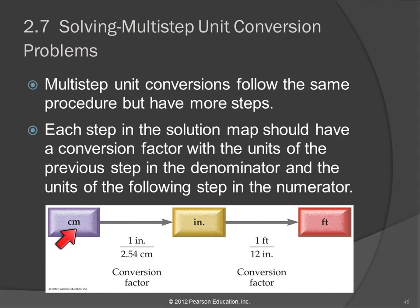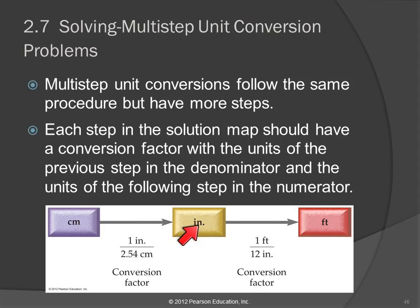So here in this example, we're converting a number in centimeters to a measurement in feet. The path written out here is we're going to first convert centimeters to inches, and then inches to feet. We know the relationship between centimeters and inches: one inch is 2.54 centimeters. That is available in a table in your book, and there's a lot of conversion information in the back cover of your book if you don't want to page through to chapter 2.